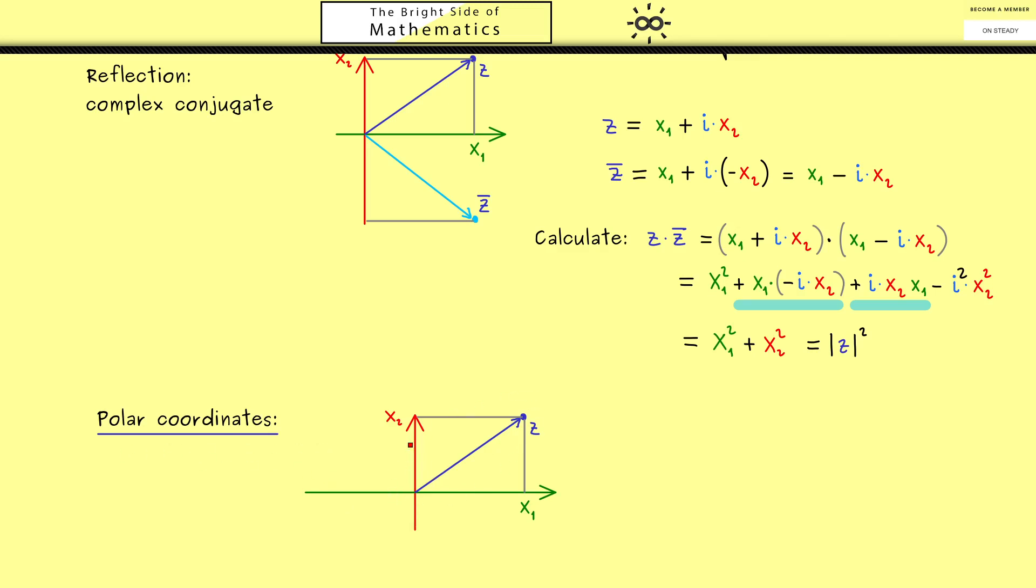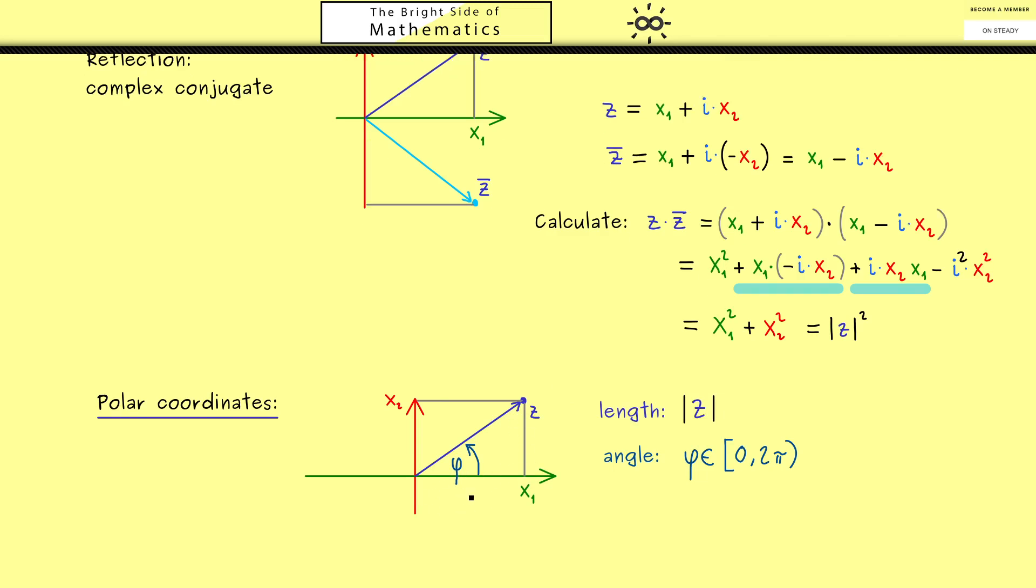Please recall we already know what the length of the complex number is. In other words if you know the length we know the circle where the complex number has to lie on. And now to fix the point exactly we just need an angle. So let's call the angle φ and it should lie between 0 and 2π. Now from above we know when we have the real and the imaginary part of z we can calculate the length. And with this information we are also able to calculate the angle. This also works in this right angle triangle.